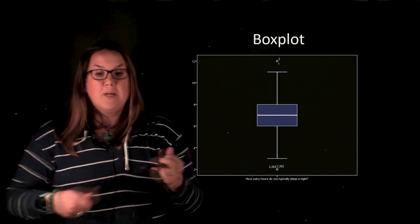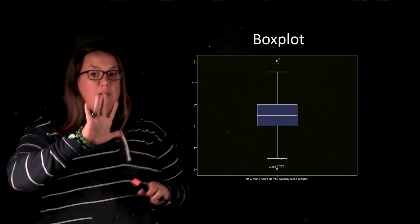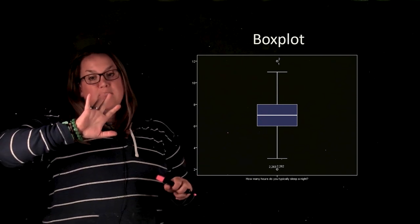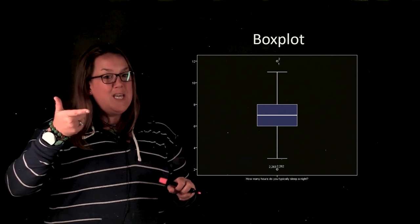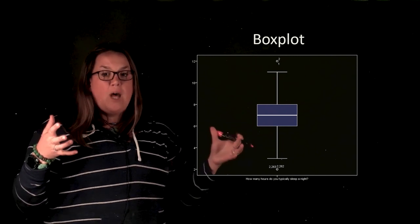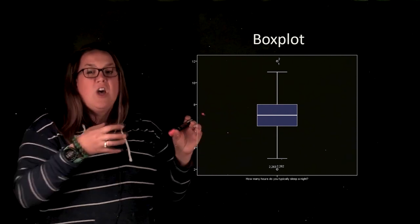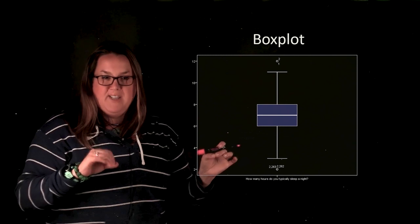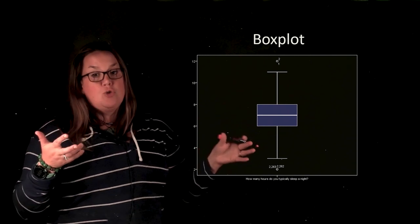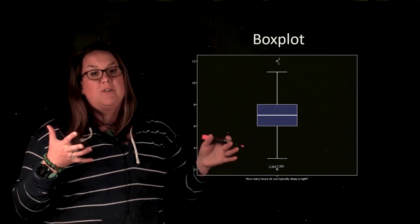Now in a box plot, because it's a graphical display of the five number summary, it actually has a location for each of those five numbers. Sometimes they're harder to see because if you have a data set where a lot of the numbers are condensed, you actually might have part of the five number summary where they're overlapping or they're the same. Here though, we actually do have all five numbers of the five number summary represented.